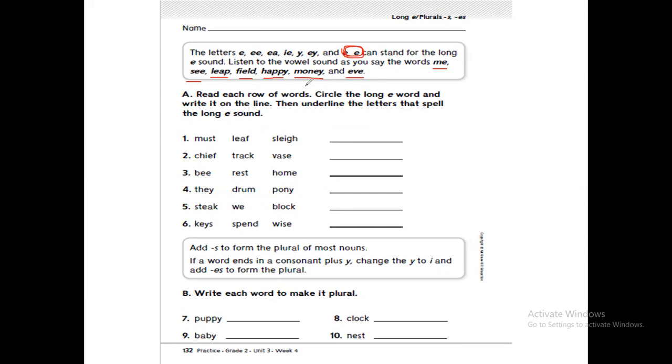Number one: must, leaf, or slay? Leaf - the 'ea' make the long 'e' sound. Chief, track, or raise? Chief - the 'ie' make the long 'e' sound. Be, first, or home? Be. They, drum, or pony? Pony - the 'y' makes the long 'e' sound.